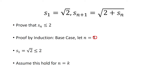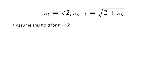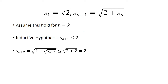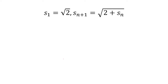We assume that this holds for n equals k — that is our inductive hypothesis: s_{k+1} is less than or equal to 2. Now consider k+2: that's going to be the square root of 2 plus the square root of s_{k+1}, and we know s_{k+1} is less than or equal to 2. So we plug that in, and the square root of 2 plus 2 equals 2, which finishes that proof.